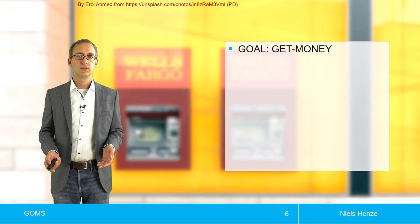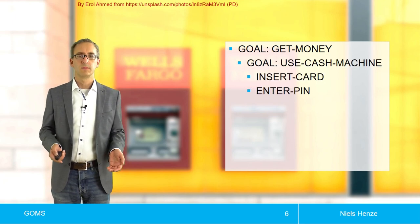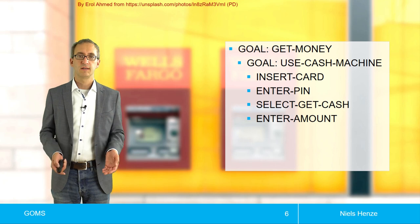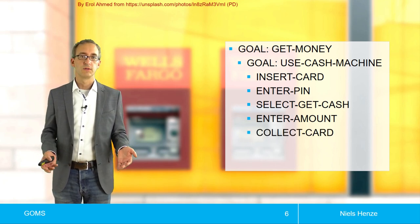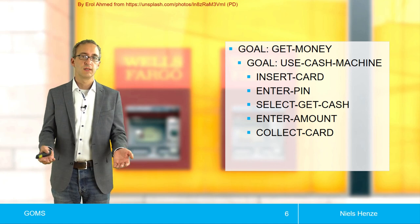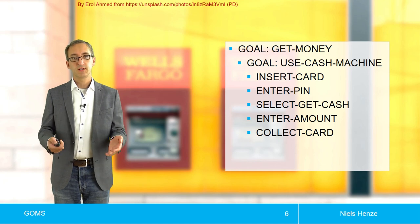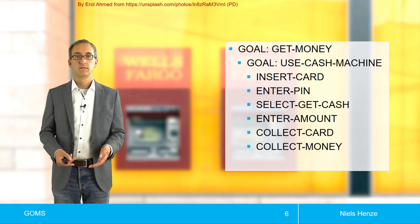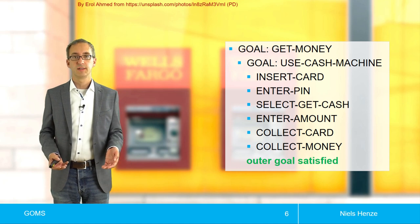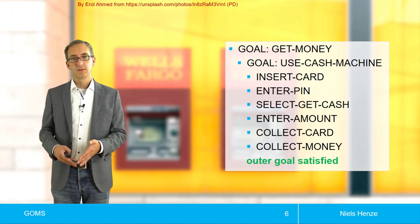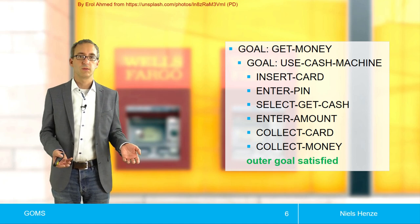I still want to get cash, and I still want to use a cash machine. I insert my card, I enter the PIN, I select get cash, I enter an amount, and then I have to collect my card because there's no other option. The machine just tells me collect your card. And then this is the next step in the process. And only after collecting my card, I can collect my money. And only then my outer goal is satisfied. So the process or the machine or the computer ensured that I don't lose my credit card.